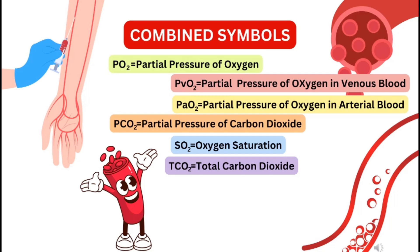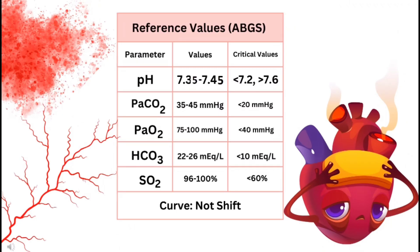Now, very important reference values for ABGs. There are five key parameters. pH normally is 7.35 to 7.43. Critical or panic values for pH: less than 7.20 or more than 7.60 must be reported immediately. Partial pressure of carbon dioxide must be between 35 to 45 mmHg in the normal range; if it becomes less than 20 mmHg that is not a good sign and must be reported immediately.